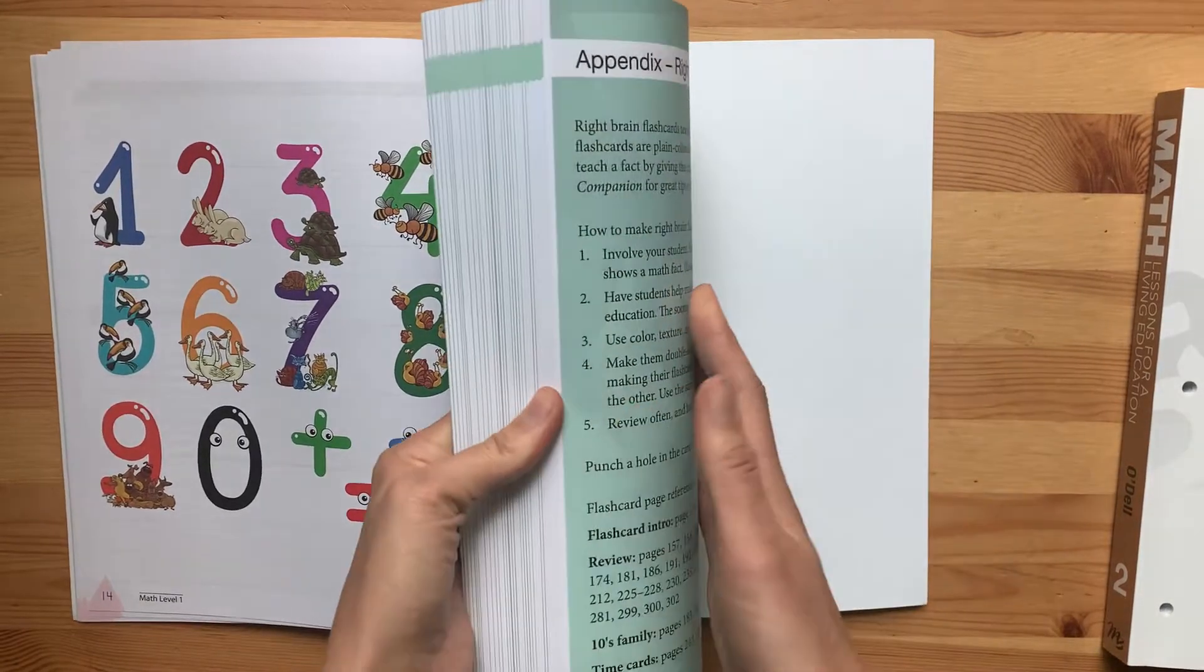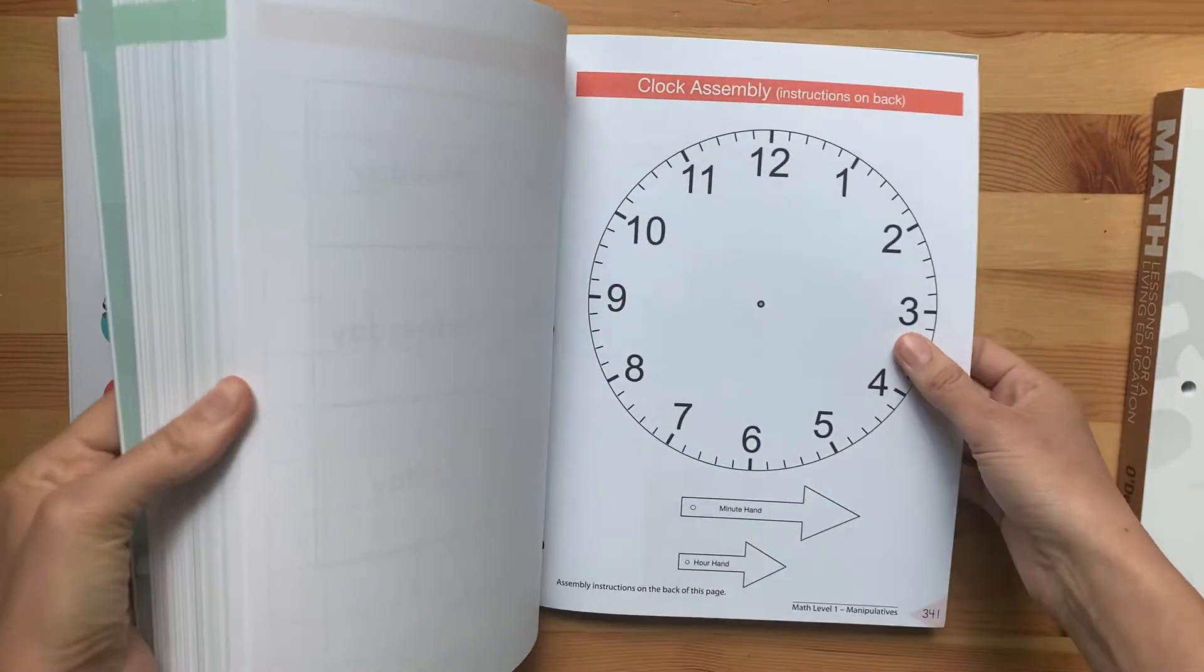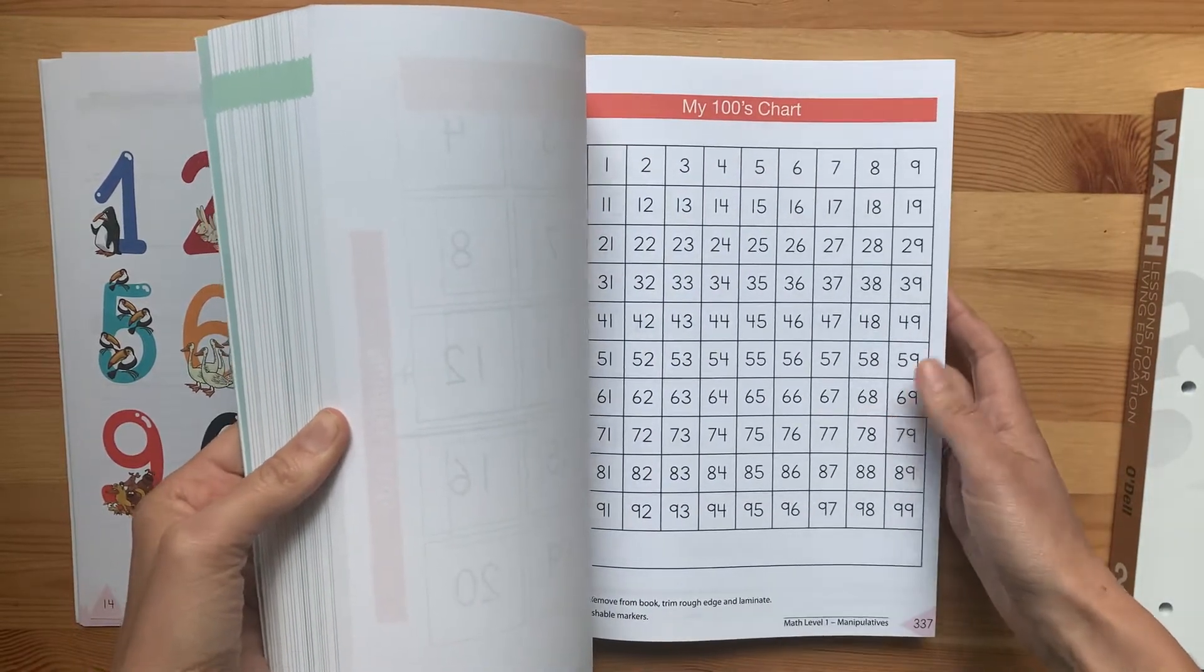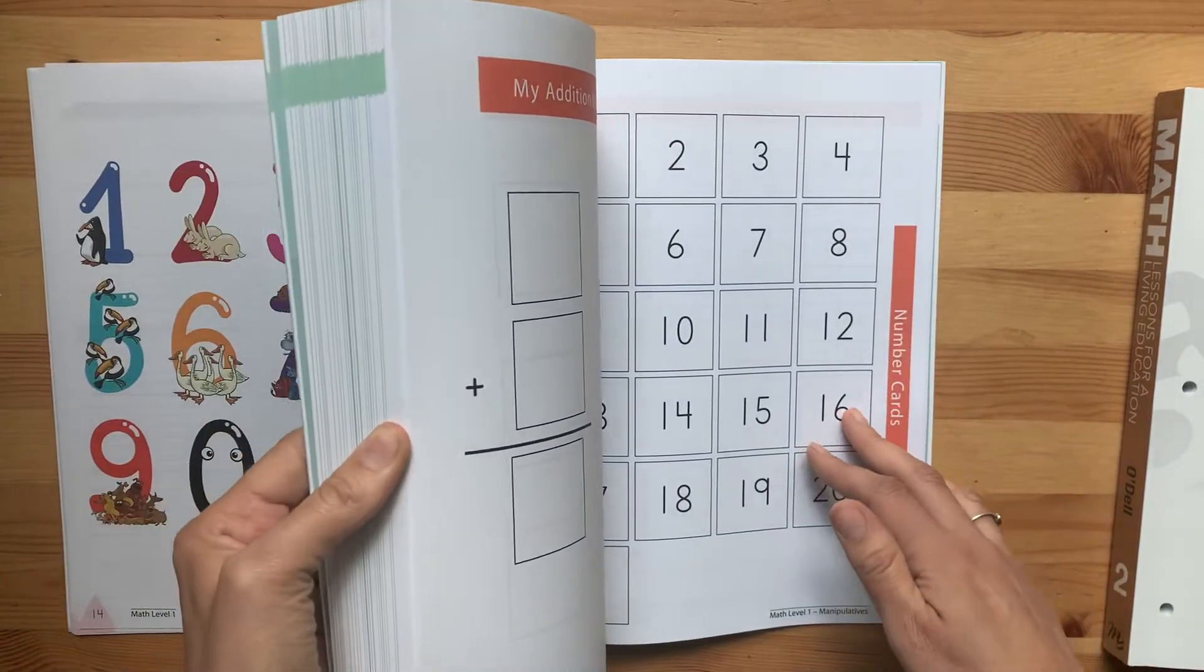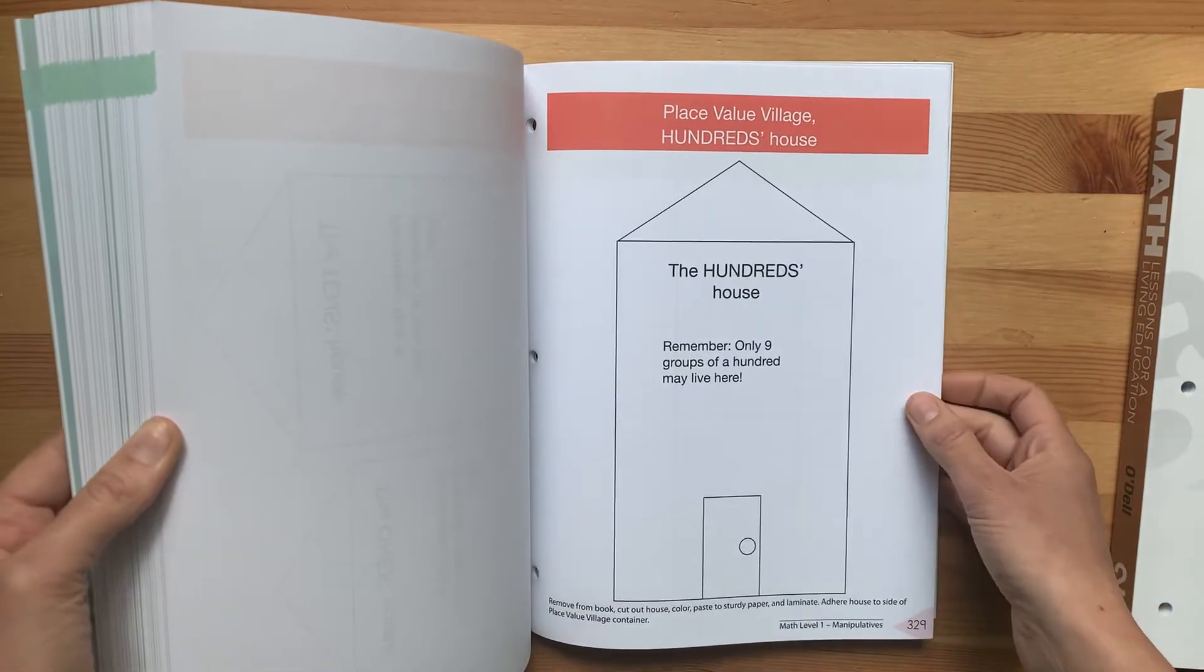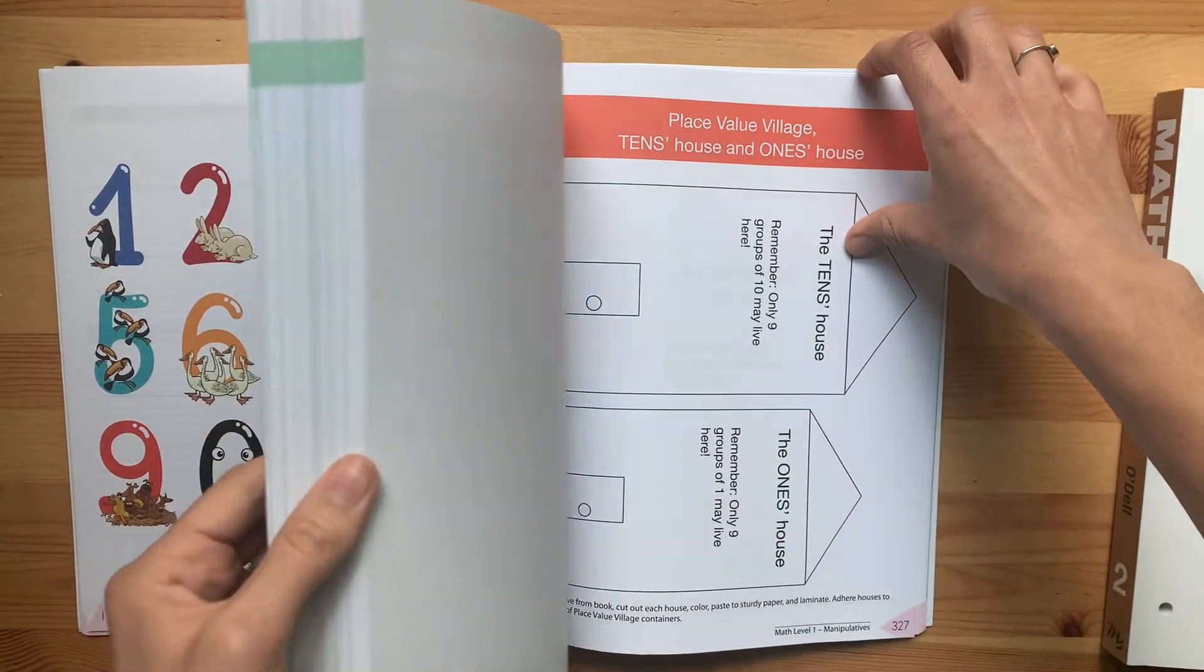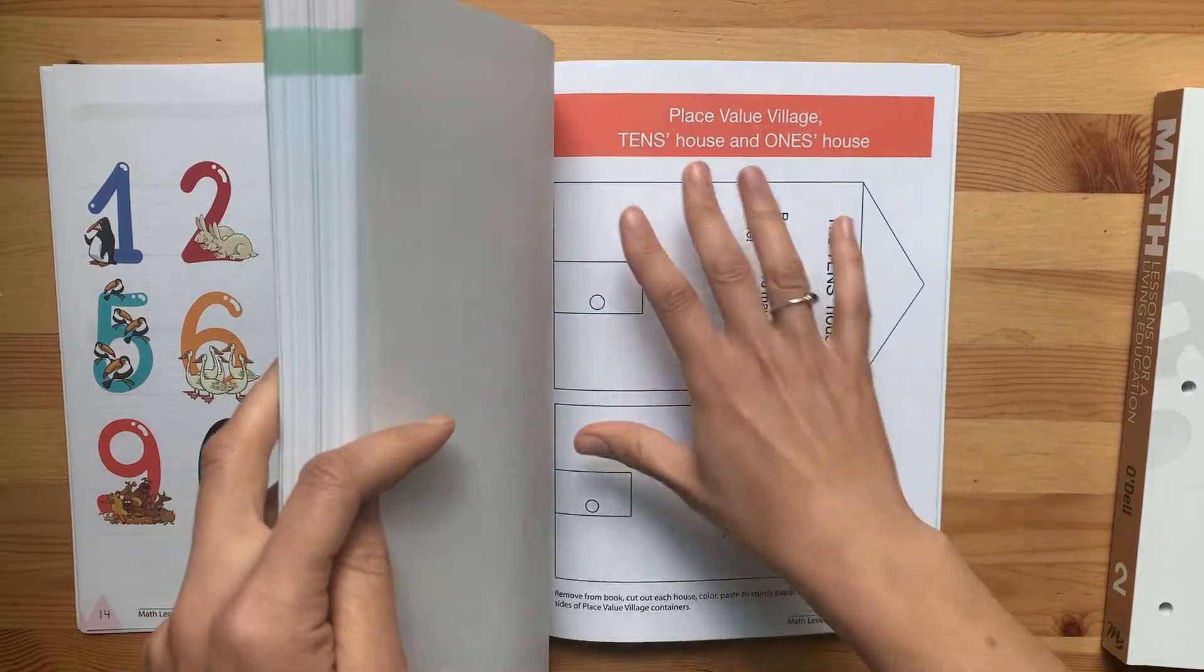Before we flip through, I want to show you a few things in the back that you will use during these lessons. Some of the directions recommend laminating because these would be things that you might use often during the lessons, especially the place value village. There's an addition mat, number cards, and these are just things that they use throughout the lesson. Here is the hundreds house. This is the visual that Masterbooks is going to use over and over again: the ones house, tens house, and the hundreds. These would be good to laminate or place inside of a sheet protector because you'll be using these a lot.